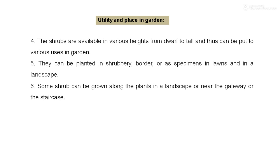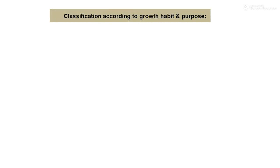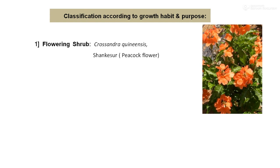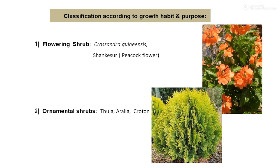Some shrubs can be grown along the path in a landscape, or near the gateway or a staircase. Classification of shrubs on the basis of their habit: flowering shrubs like Crossandra, which has attractive flowers, Shankasur, and many more. And ornamental shrubs — those which have attractive foliage, like thuja, aralia, and croton — these are popular shrubs under the ornamental category.